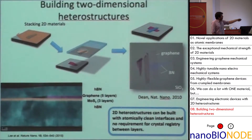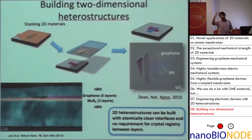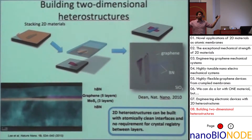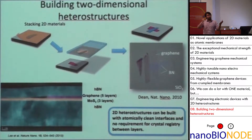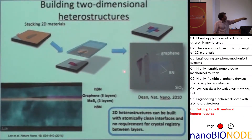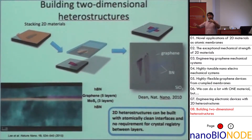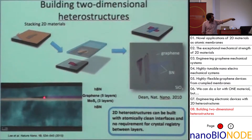The way we build these heterostructures is very simple. You can take a 2D material, use a sticky polymer to peel it off, and under a microscope move it around and align it over another 2D material. Stick the two together, heat it slightly to change the stickiness of the polymer, then peel the polymer off — leaving the 2D material behind. Now you have a heterostructure. The first demonstration of this is putting graphene on boron nitride, which is an insulating 2D material. Here in a cross-section TEM image, you can see boron nitride, molybdenum disulfide, graphene, and boron nitride all sandwiched together.